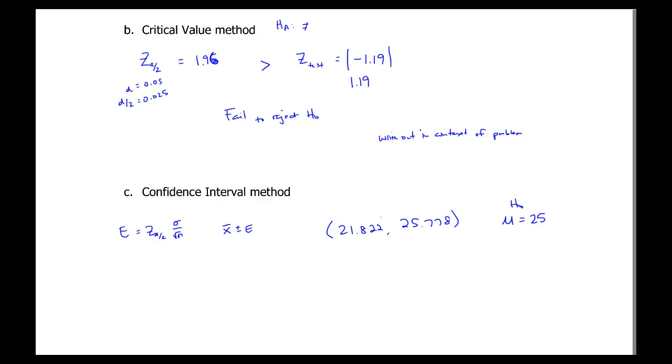The way that you interpret a confidence interval in testing is you look to see if it includes the population mean claim from the null hypothesis. So the population claimed value is 25, which is in that confidence interval. So 25 is between these two numbers. And when the claimed value is within the range of your values, then you fail to reject null hypothesis. And again, you can write out that conclusion within the context of the problem. But I'm not going to do that again here.